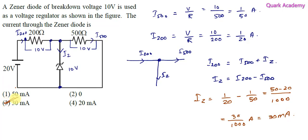So option three is the correct answer. 30 milliamperes current will pass through the zener diode.